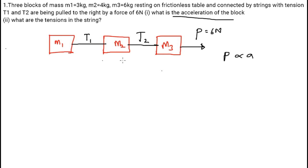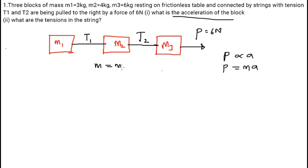All the objects will tend to move at the same acceleration. Any time a vehicle is towing another vehicle, they will move at the same acceleration because of the applied force produced from the engine. P will be equal to — removing the proportionality and introducing the constant mass — mass of the system multiplied by the acceleration. Mass of the system is M1 plus M2 plus M3, which is 3 plus 4 plus 6, equal to 13 kilogram.